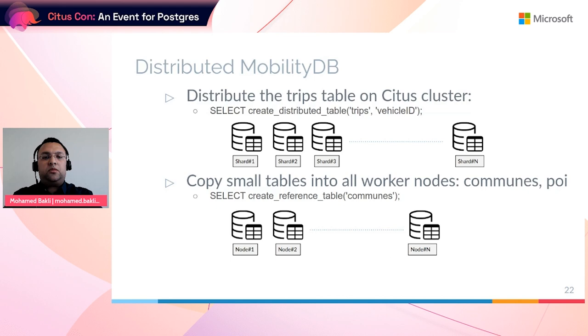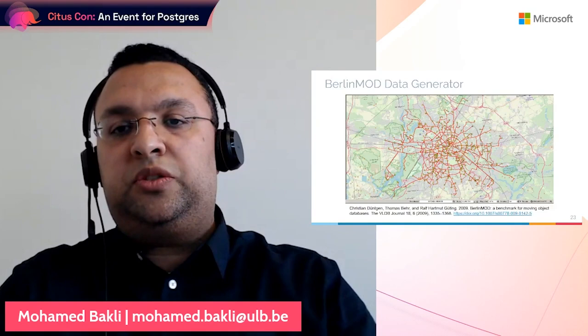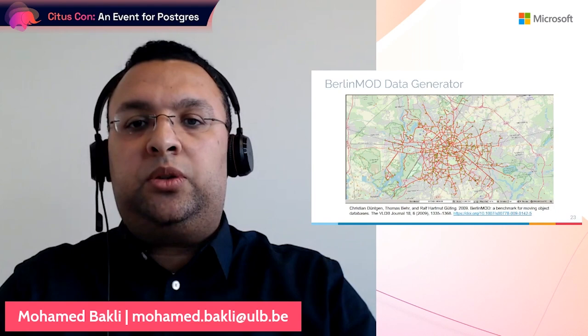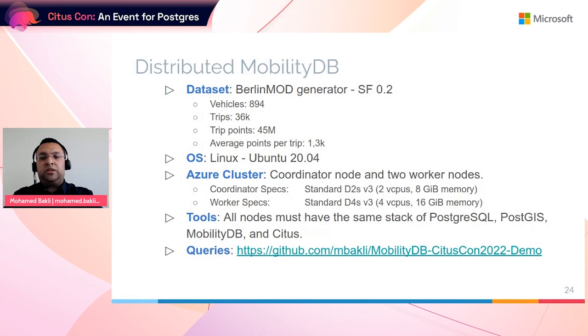The data used is simulated data from the BerlinMod generator, implemented in MobilityDB. BerlinMod is a benchmark created by Kristen, Thomas, and Ralph Gutting that simulates the movement of vehicles in a city — each vehicle makes a trip from home to work in the morning, from work to home in the afternoon, and some leisure trips in the evenings and weekends. The demo specs include the dataset size, the Azure cluster, and a link to a SQL script for partitioning data and performing queries.